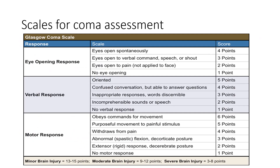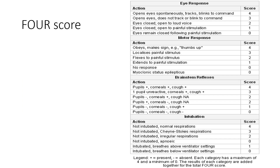Objective scales for coma assessment include the Glasgow Coma Scale, which is very widely used but not always representative of patient condition, as it was initially developed for coma in traumatic patients. The more representative scale is the FOUR scale — it is more detailed, has sections for brain stem reflexes and respiration, and better represents the real grade of coma.